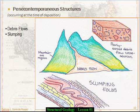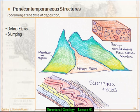It's too consolidated for that. So it just kind of slumps down, and it creates these asymmetric, wrinkly folds that you have to be able to recognize as being what they are — a gravity-driven slump — and not due to tectonic forces.